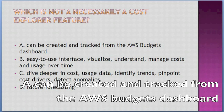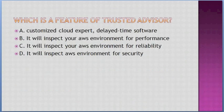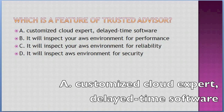Which is a feature of Trusted Advisor? Options: A. Customized cloud expert real-time software, B. It will inspect your AWS environment for performance, C. It will inspect your AWS environment for performance reliability, D. It will inspect your AWS environment for security. Answer: A — customized cloud expert real-time software.